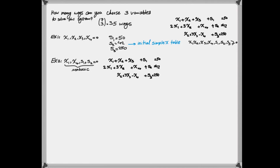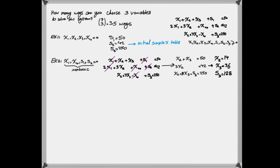If I consider the system and put zero for x1, x4, s1, and s2, I get a reduced system with three decision variables and three equations. The answer for the basic variables is x2 equal to 14, x3 equal to 36, and s3 equal to 128. We could go on and find all 35 solutions this way.